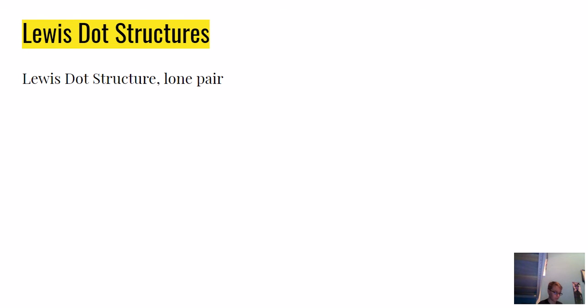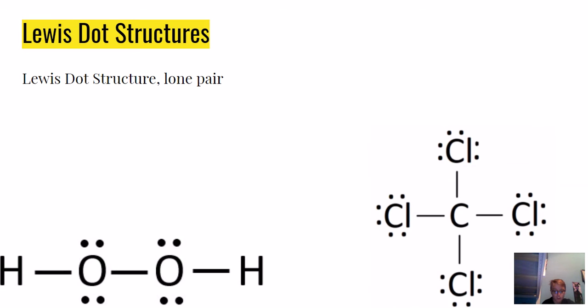Lewis dot structures are diagrams that show the bonding between atoms of a molecule and the lone pairs of electrons that may exist in the molecule. The steps include: add up the total number of valence electrons found in the entire compound. Draw the simple structure, skeleton structure, of the compound by connecting everything with single bonds only. Keep in mind that each bond counts for two shared electrons. Add electrons to all the non-central atoms. Put any unused electrons on the central atom. If all atoms now have eight electrons, you're done.